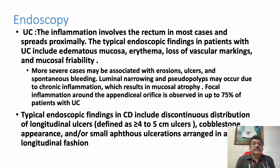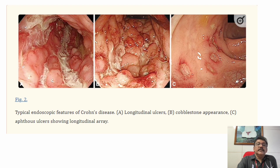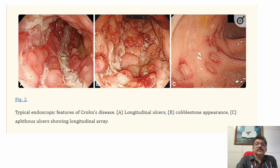Typical endoscopic findings in ulcerative colitis include edematous mucosa, erythema, loss of vascular markings, and mucosal friability. Typical endoscopic findings in Crohn's disease are a discontinuous distribution of longitudinal ulcers, cobblestone appearance, and small ulcerations in longitudinal fashion. You can remember: C for cobblestone and longitudinal ulcers are classical features of Crohn's disease.